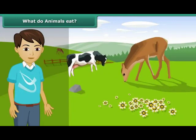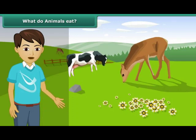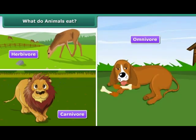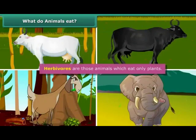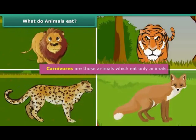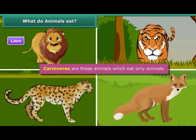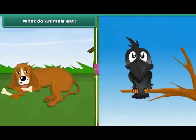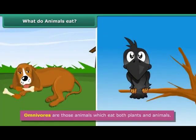What do animals eat? There are three types of animals on the basis of the nature of food they eat. They are herbivore, carnivore and omnivore. Herbivores are those animals which eat only plants — example: cow, buffalo, goat, elephant, etc. Carnivores are those animals which eat only animals — example: lion, tiger, jaguar, jackal, etc. While omnivores are those animals which eat both plants and animals — example: dog, crow.